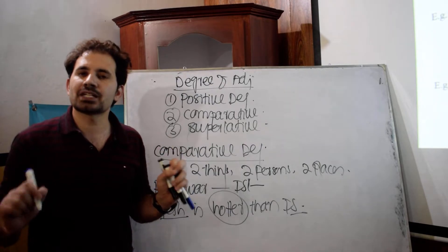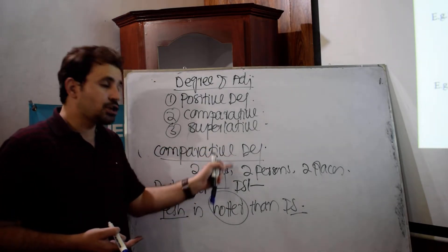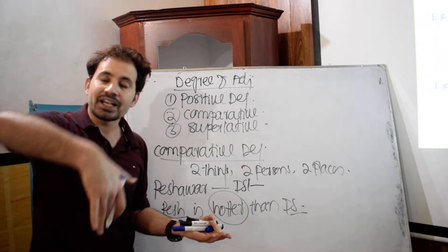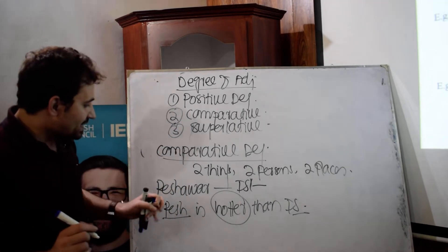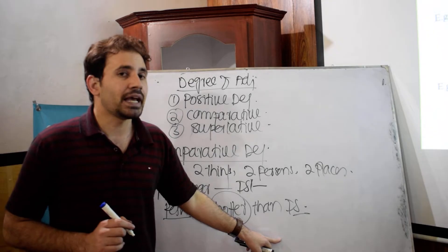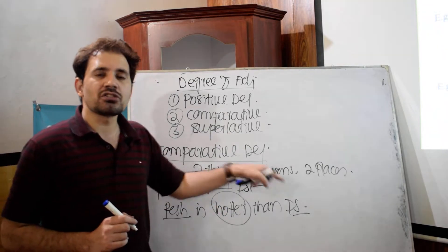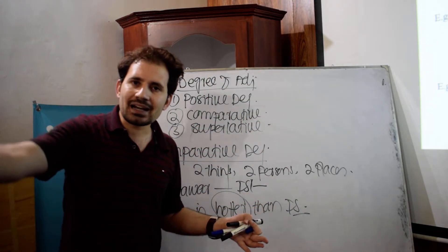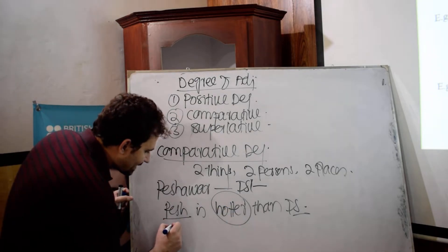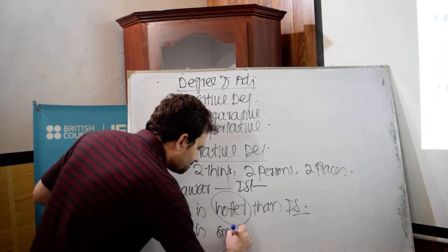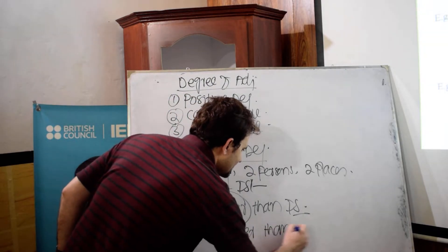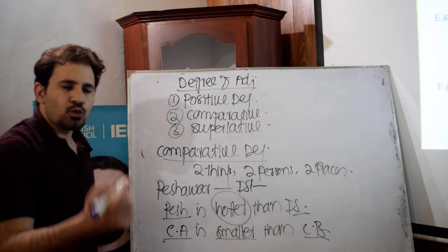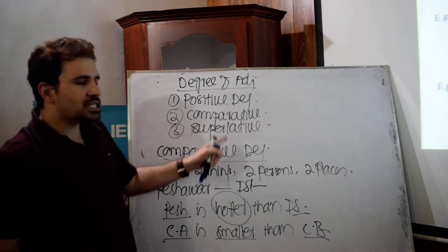In comparative degree we use the comparative form of the adjective. 'Hot' is the positive degree; 'hotter' is the comparative form. You cannot say 'the shower is hot than Islamabad' — that is incorrect. For example, 'Class A is smaller than Class B' — here 'small' is the positive degree and 'smaller' is the comparative degree.